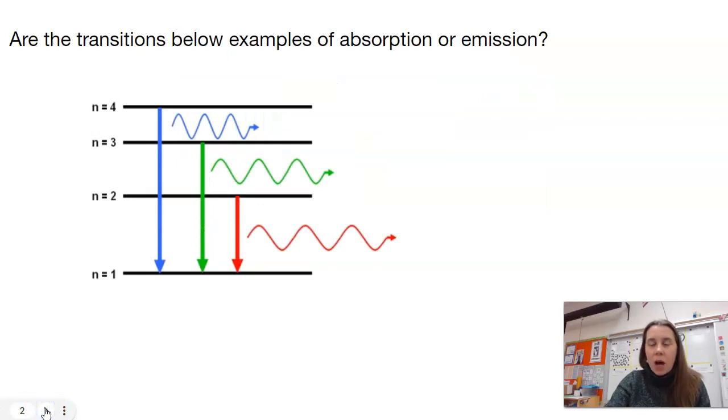First, let's talk about absorption versus emission. We're talking about electrons moving up and down into different energy levels. If an electron is absorbing energy, it's going to move from low potential energy to high potential energy. So absorption is low to high.